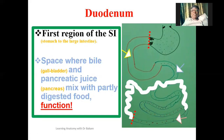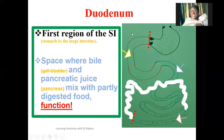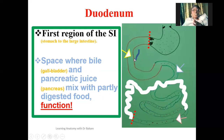The duodenum also creates a space through which we have the emptying of bile and also pancreatic juice. Bile is produced by the liver and stored in the gallbladder. After storage in the gallbladder, it is needed for the process of digestion, and the only region of the GI tract where this is emptied into is the duodenum. The bile duct carries bile and releases it into the duodenum, where it is used for the emulsification of fat. We also have the pancreatic duct, through which the pancreatic juice is released into the duodenum.